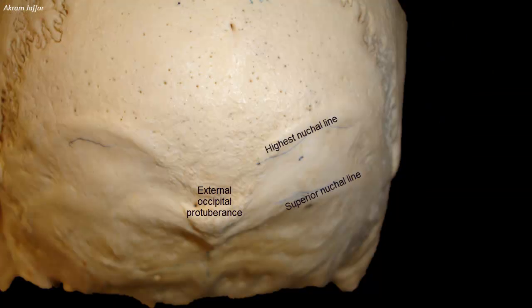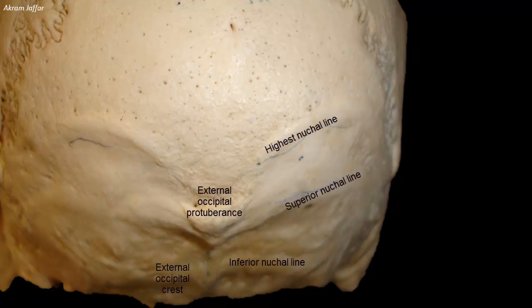Below the superior nuchal line, the bone that covers the cerebellar hemispheres gives attachment to muscles at the back of the neck. Halfway between the superior nuchal line and foramen magnum is the inferior nuchal line, which lies concentric with both. The external occipital crest in the midline, between the external occipital protuberance and foramen magnum, bisects the area and provides attachment for the ligamentum nuchae. The area on both sides of the external occipital crest provides attachment for muscles of the back of the neck.